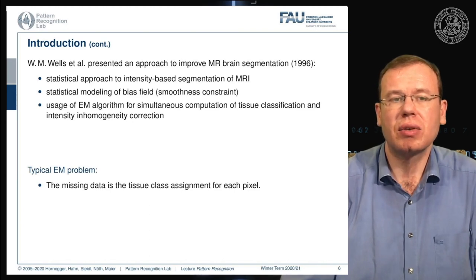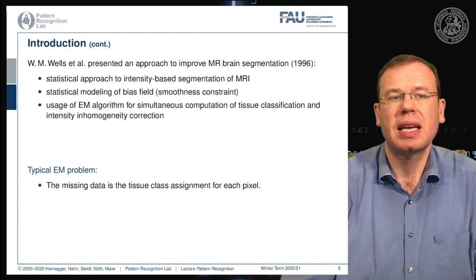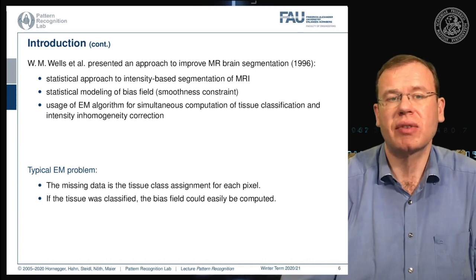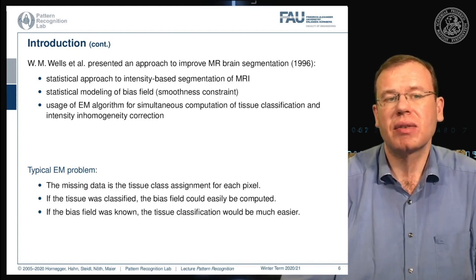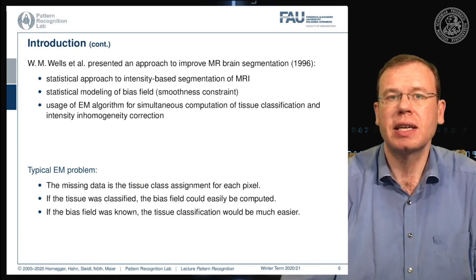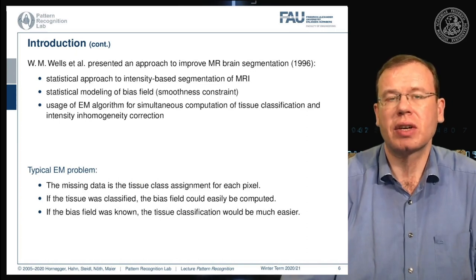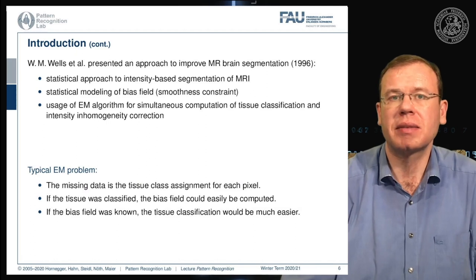The missing data is the tissue class assignment for each pixel. If the tissue were classified correctly, we could easily compute the bias field as the deviation from the correct gray value to the observed one. Conversely, if the bias field were known, tissue classification would be much easier. So we have a missing information problem: to derive the tissue class from the gray value we need correct observations, which are hindered by the bias field — we have to simultaneously estimate both.